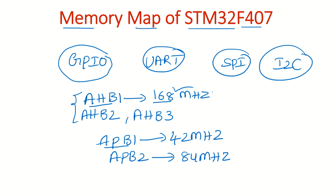All the peripherals are connected to the APB1 and APB2 buses, except GPIO ports. The GPIO ports are connected to the AHB1 bus because sometimes we need to perform high-speed operations through GPIO ports. That's why the manufacturer connected GPIO ports to the AHB1 high-performance bus.